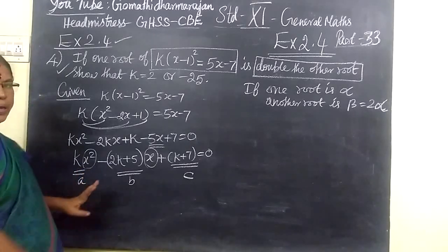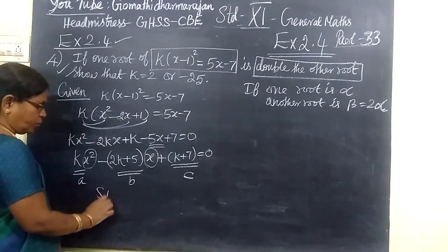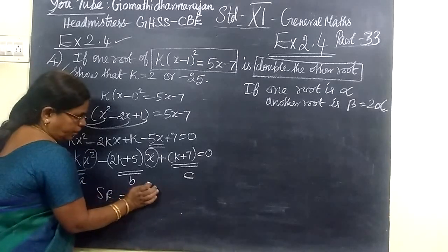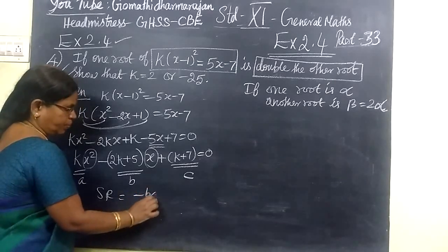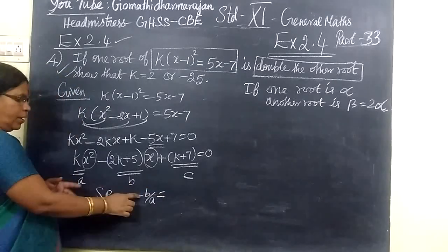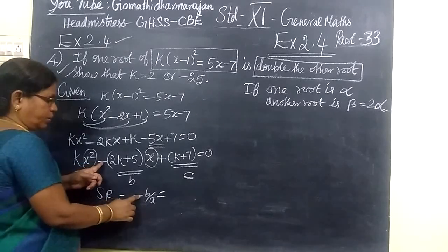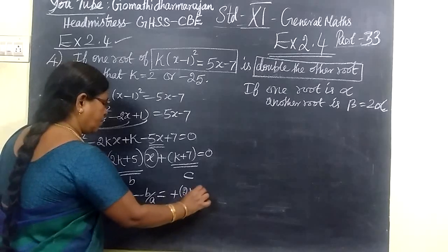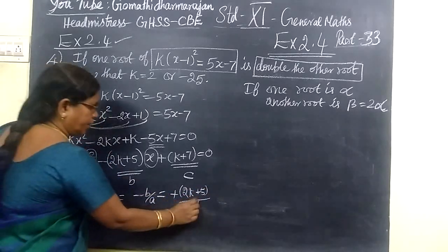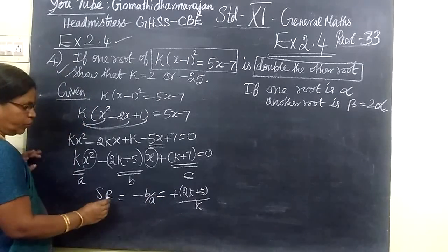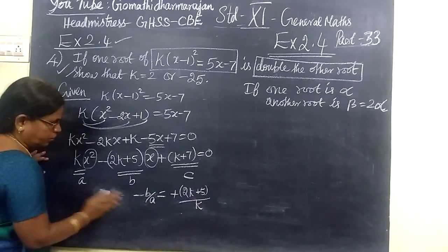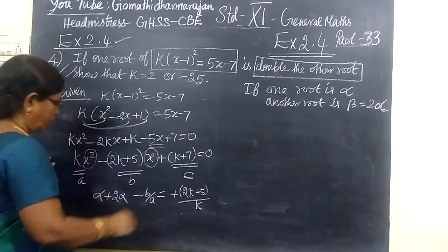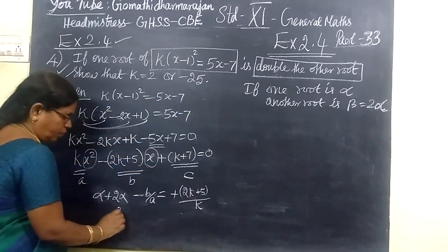So you know a, b, c. You know sum of the roots is equal to minus b by a. So now the sum is alpha plus 2 alpha, here minus b by a. What is minus b? Already b equals minus (2k plus 5), so it becomes plus. So plus (2k plus 5) by a, which is k. This is the sum of the roots: alpha plus 2 alpha equals 3 alpha.